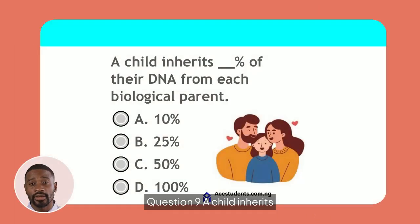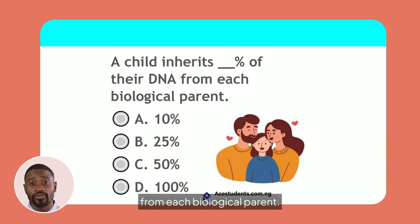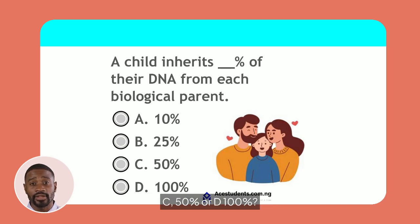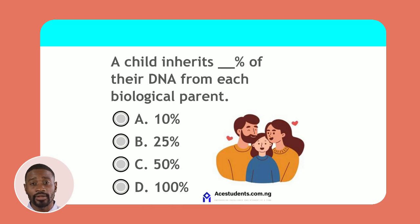Question 9. A child inherits what percentage of their DNA from each biological parent? Is it A. 10%, B. 25%, C. 50%, or D. 100%? Consider the genetic contribution from parents.